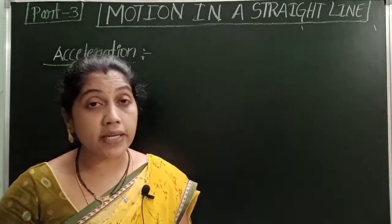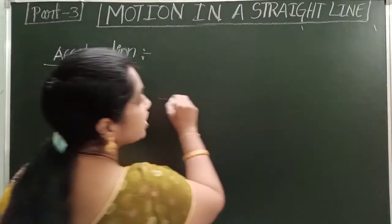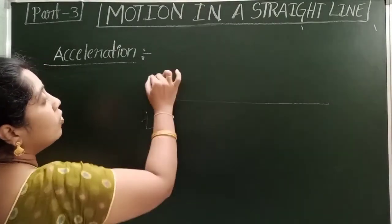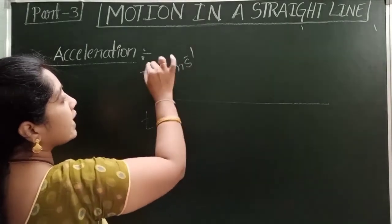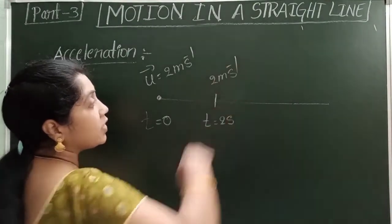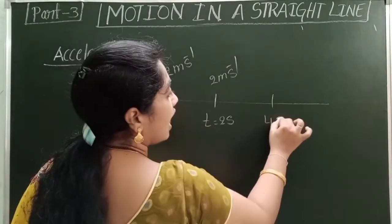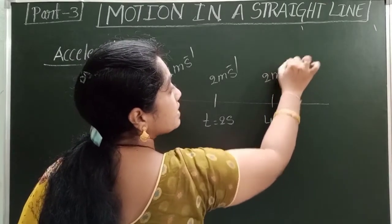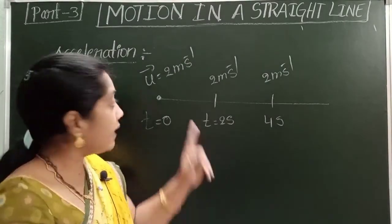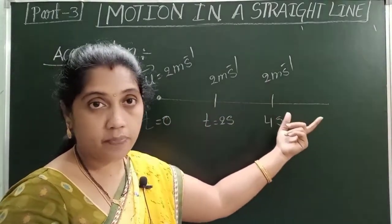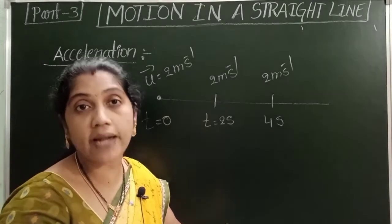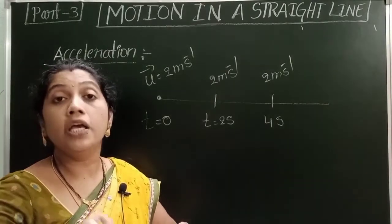Let us take one example to understand acceleration clearly. When an object is moving along a straight-line path, initially at time t equals 0, the velocity of the object is 2 meters per second. At 4 seconds, the velocity of the object is still 2 meters per second. The direction is the same and the magnitude of the velocity is also constant. This kind of motion is called uniform motion.